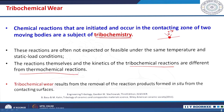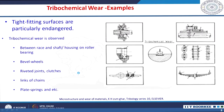Tribochemical wear results from the removal of reaction products formed in situ from the contacting surfaces. Tribochemical wear is observed generally between races and shafts on roller bearings, bevel wheels, riveted joints, clutches, links of chains, plate springs, etc. There are several examples where tribochemical wear dominates in material removal.